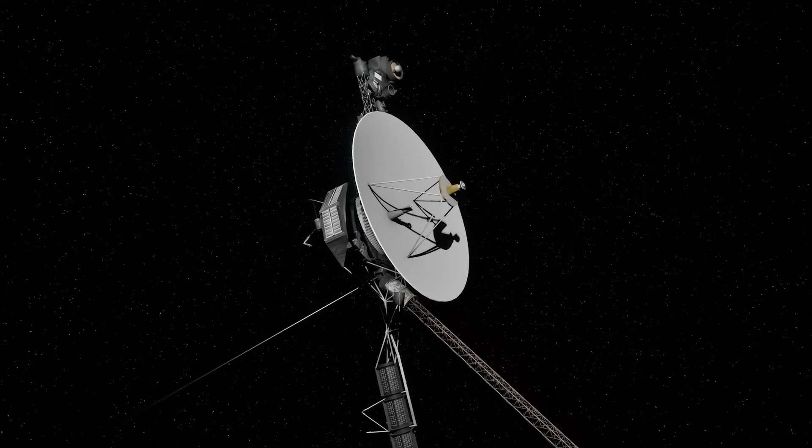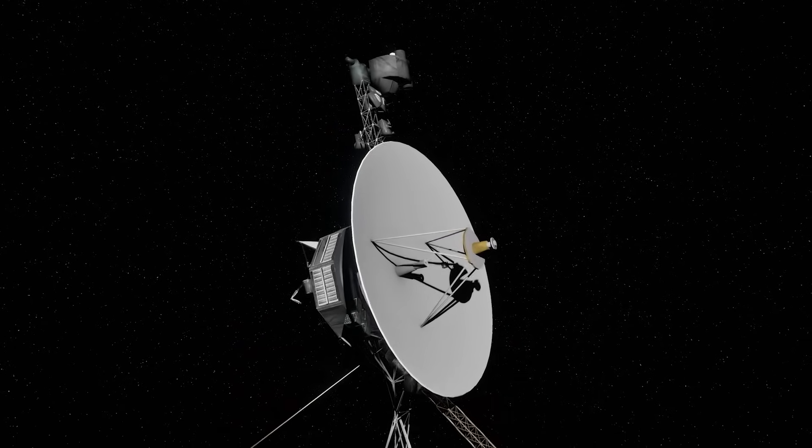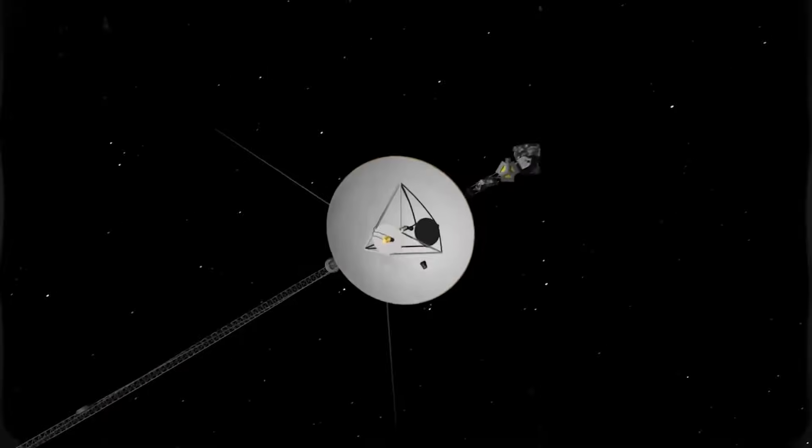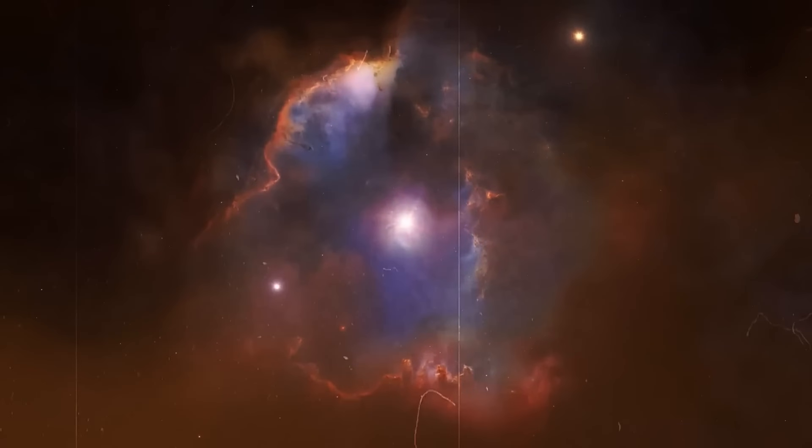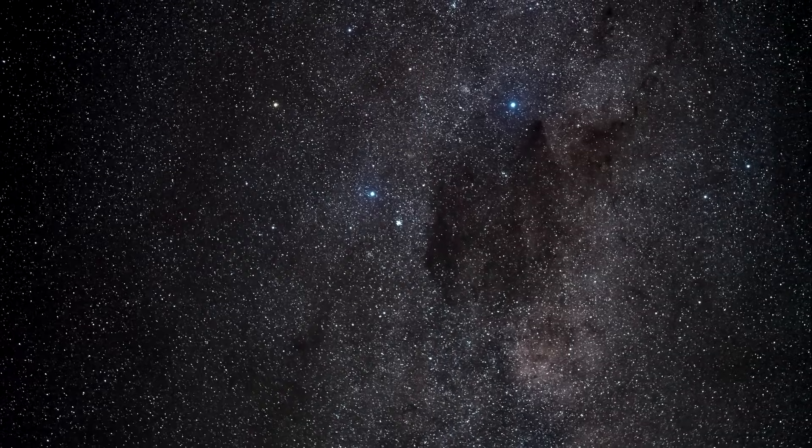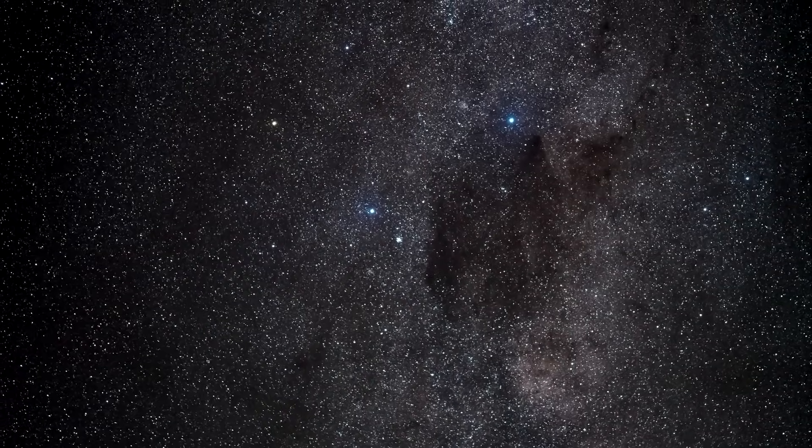To keep Voyager 1 operational, NASA has had to shut down non-essential systems, conserving its limited power supply. Despite these challenges, it continues to send invaluable data proving the resilience of its 1970s engineering.